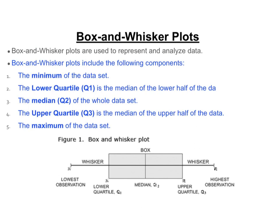We first have the minimum of the data set — that's the lowest observation, which goes all the way to the left. Then you have the lower quartile or quartile 1, which is the median of the lower half, drawn here and referred to as Q1. Then we have the median or quartile 2, which goes in the middle of the box.